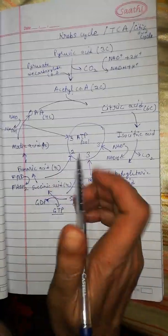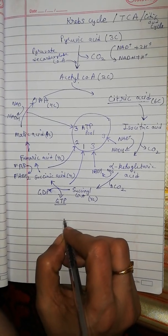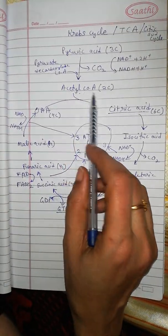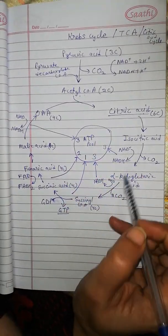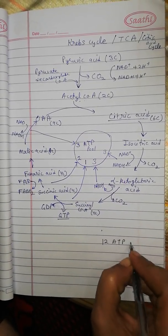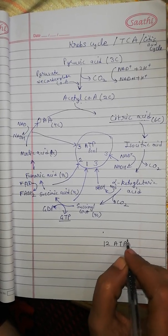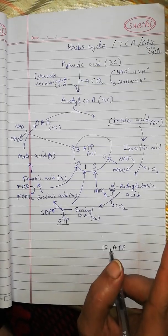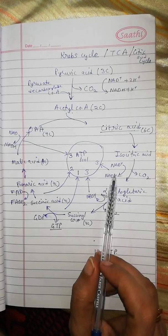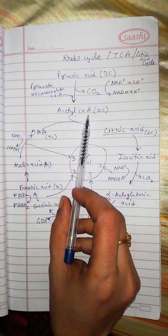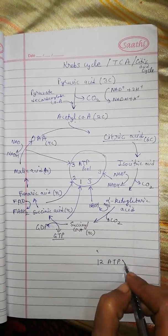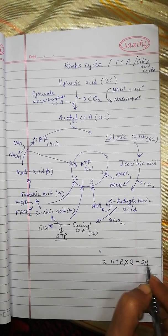This NADH leads to formation of three ATP molecules. So overall in Krebs cycle, when one acetyl coenzyme A enters the cycle, there occurs formation of 12 ATP molecules. Since breakdown of glucose forms two pyruvic acid molecules, there is entry of two acetyl coenzyme A molecules into mitochondria, so there occurs formation of 24 ATP molecules as a result of Krebs cycle.